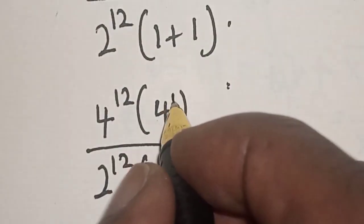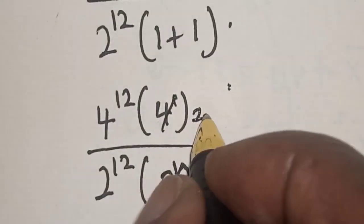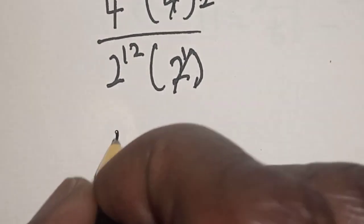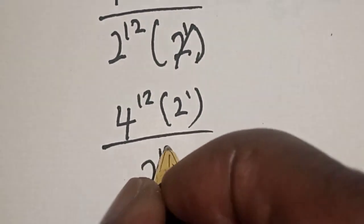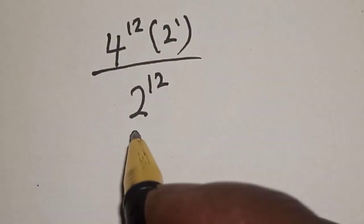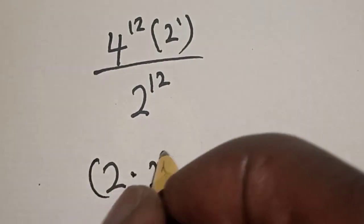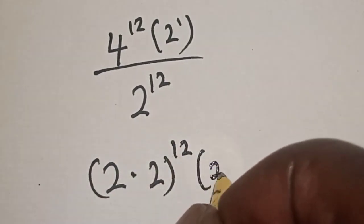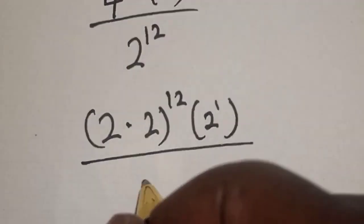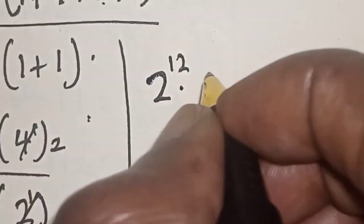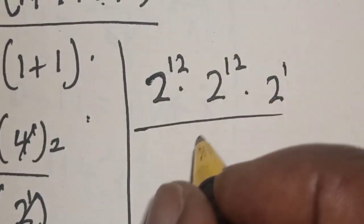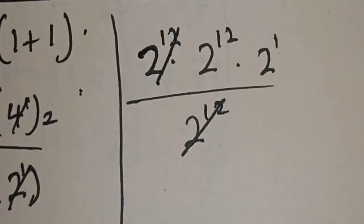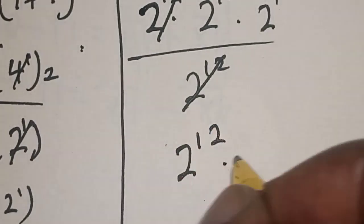We can write 4 raised to power 12 as 2 raised to power 12 multiplied by 2 raised to power 12, and the 4 in the numerator as 2 raised to power 1 times 2. So the numerator becomes 2 raised to power 12 times 2 raised to power 1, over 2 raised to power 12. The 2 raised to power 12 terms cancel out, leaving 2 raised to power 12 multiplied by 2 raised to power 1.